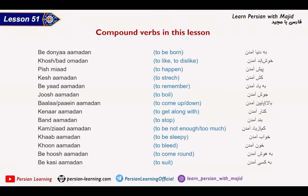Here is the list of compound verbs used in this lesson: BE DUNYA AAMADAN, KHOSH AAMADAN, BAD AAMADAN, PISH AAMADAN, KISH AAMADAN, BEYAD AAMADAN, JUSH AAMADAN, BALA AAMADAN, PAEEN AAMADAN, KINAR AAMADAN, BEND AAMADAN, KEM AAMADAN, ZYAD AAMADAN, KHAB AAMADAN, KHOON AAMADAN, BEHOOSH AAMADAN, BEYKASI AAMADAN.